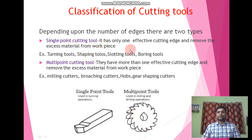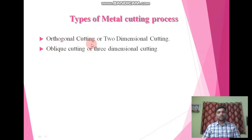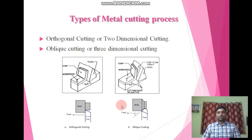That covers the classifications of cutting tools. Now we will discuss the types of metal cutting processes. There are two types: the first is orthogonal cutting and the second is oblique cutting. Orthogonal cutting is also called two-dimensional cutting, and oblique cutting is called three-dimensional cutting. The left-hand side diagram represents orthogonal cutting and the right-hand side diagram represents oblique cutting.